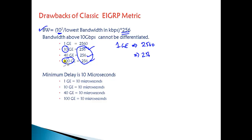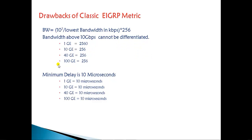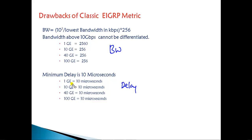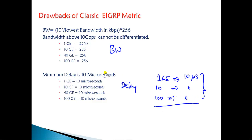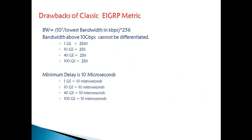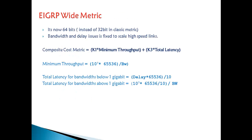The classic EIGRP formula does not differentiate between a 10-Gbps link and a 100-Gbps link — both links are treated equally and both routes may be installed in the routing table if the metric is equal. Similarly, the delay value is the same for 1-Gbps, 10-Gbps, and 100-Gbps links. The major drawback with classic EIGRP is that these metric calculations do not scale for bandwidth above 10 Gbps — all higher-speed links receive the same metric cost.